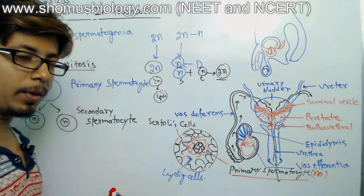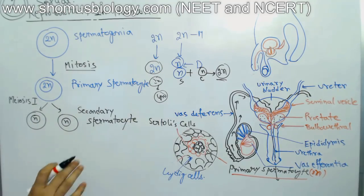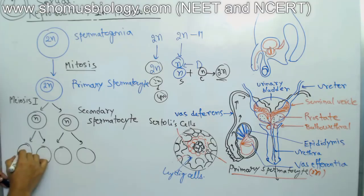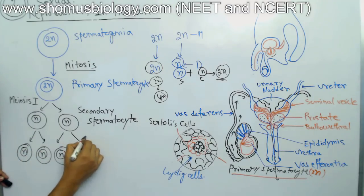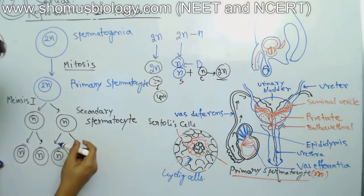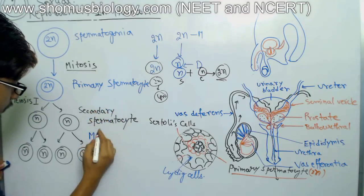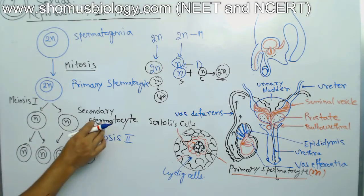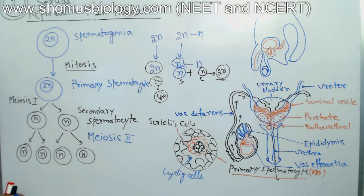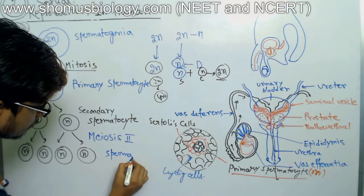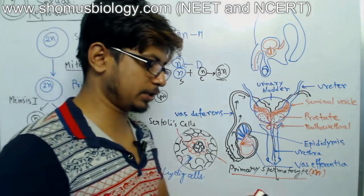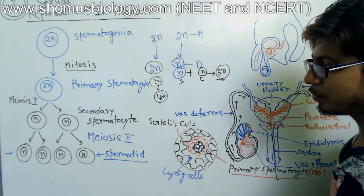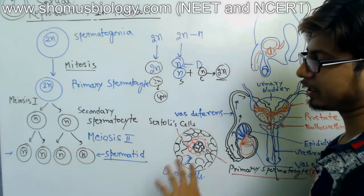After producing secondary spermatocytes, another round of division occurs — meiosis II. This second meiotic division is really important to produce multiple haploid cells. Four haploid cells are produced in total. These four haploid cells produced after meiosis II are known as spermatids, and the entire process takes place in the seminiferous tubules.